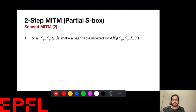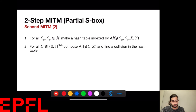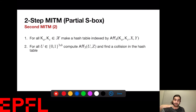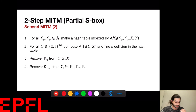This gives an affine equation where an affine function of Z and U equals an affine function of Ka, KC, X, and Y. This allows another meet-in-the-middle attack. For every Ka and KC in the good list, I evaluate the right-hand side (since X and Y only depend on Ka and KC). Then I exhaust all U values in {0,1}^(3S·B), compute the affine function on the left-hand side using U and Z (where Z is computed from U via the S-box), and look for a collision. After finding a collision, I recover KB as a linear function of U, Z, and X, then recover the remaining key bits.